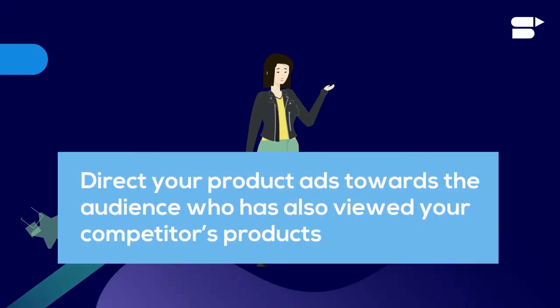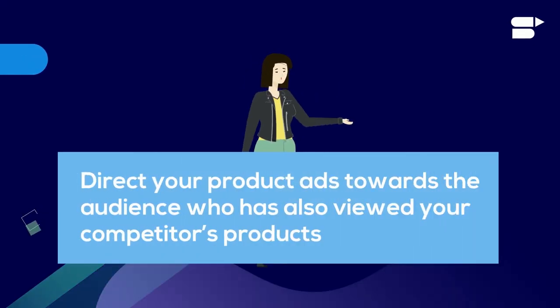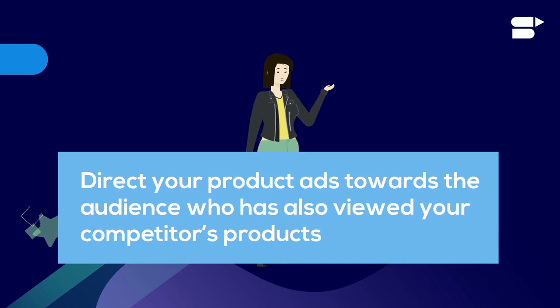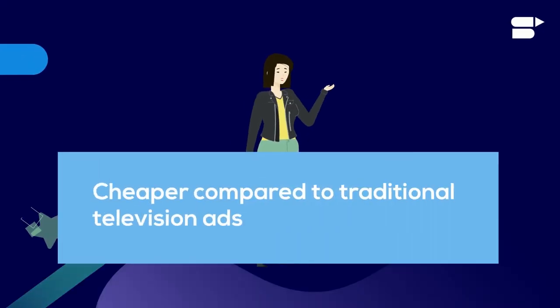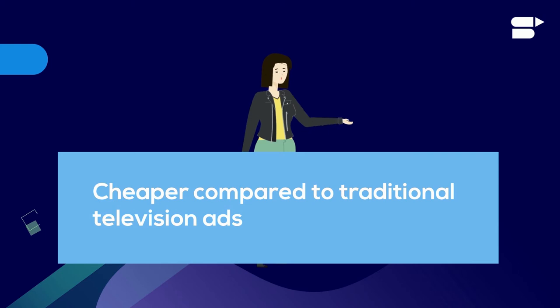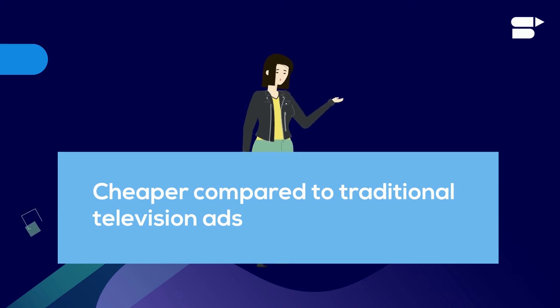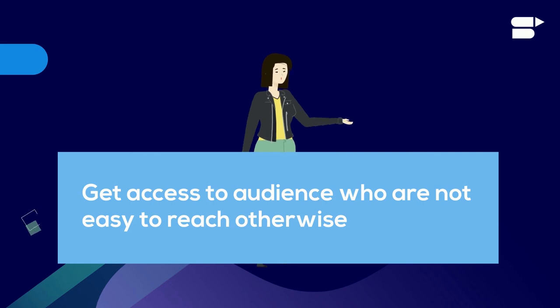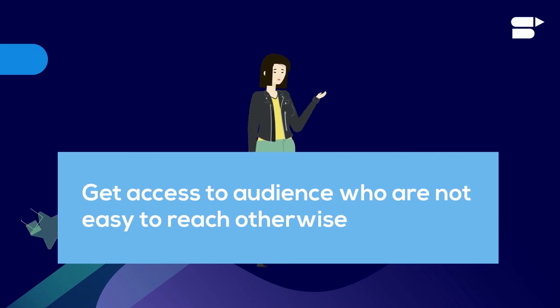Number 3: you can direct your product ads towards the audience who has also viewed your competitor's product. Number 4: Amazon OTT ads are cheaper compared to traditional television ads. Number 5: Amazon OTT advertisements will give you access to an audience who are not easy to reach otherwise.